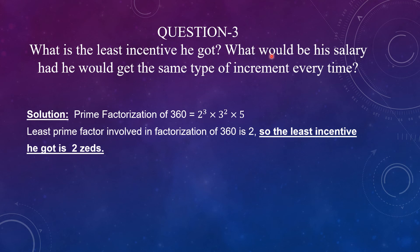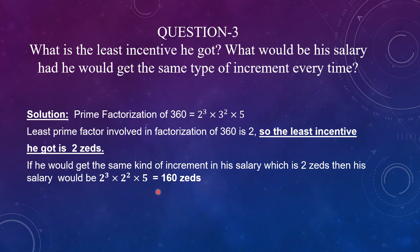And the other part of the question, if the increment was only 2 zeds every time. So, 5 times he got the increment. We need to multiply 2 five times and then we need to multiply it by initial salary. So, it will be 2 raised to the power 3 into 2 raised to the power 2 because this has happened 5 times and then multiplied by the initial salary which is equal to 160 zeds.